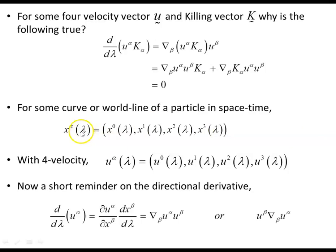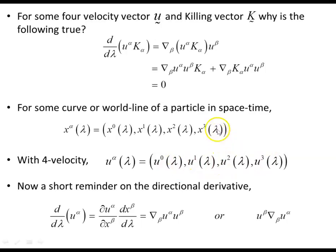For a particle with mass we could use proper time; for a massless particle we could use something like path length. For a free particle not subject to any forces, such a particle will travel geodesics. The four-velocity of this particle is just the derivative with respect to the parameter lambda, giving each of the components of the four-velocity by differentiating each component of the world line.